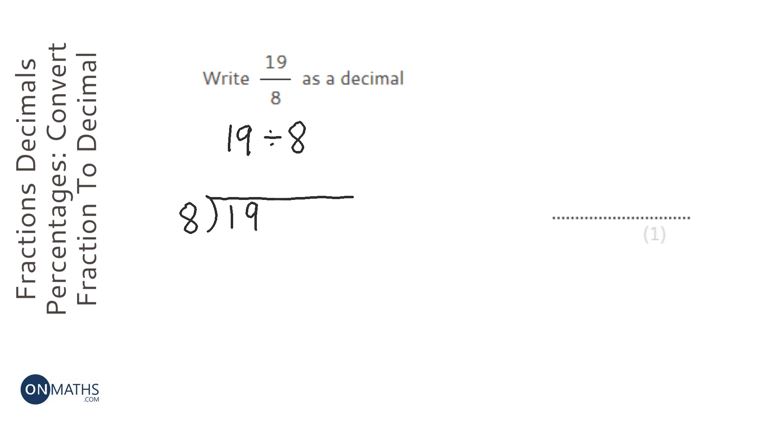So 8s into 1 don't go, so I put the 1 up here. 8s into 19 go 2. Now I do have remainders, so I need to put a decimal point and put some zeros in. I'm just going to put a few in.